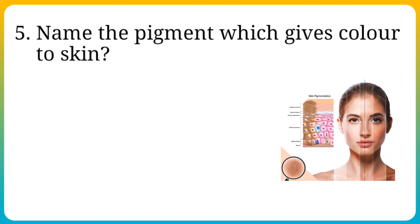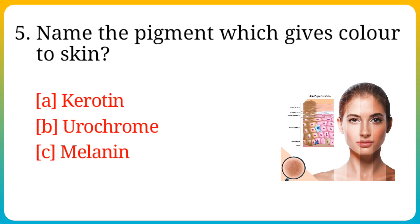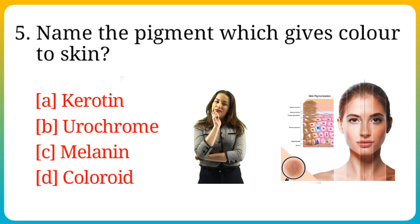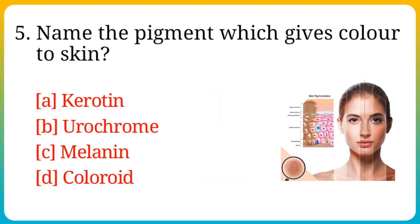Question number 5. Name the pigment which gives color to skin? Options are: A. Carotin, B. Urochrome, C. Melanin, D. Choleroid. Answer is option C. Melanin.